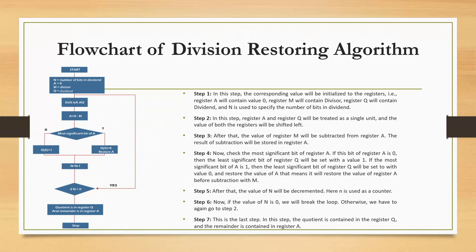Step 4: Take the most significant bit of Register A. If this bit is zero, then the least significant bit of Register Q will be set to one. If this bit is one, set the least significant bit of Register Q to zero and restore the value of A — that means restore the value of Register A to its value before the subtraction. Step 5: After that, the value of N will be decremented. Here, N is used as a counter.